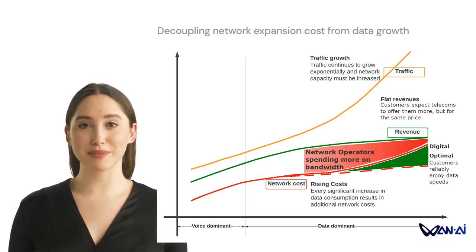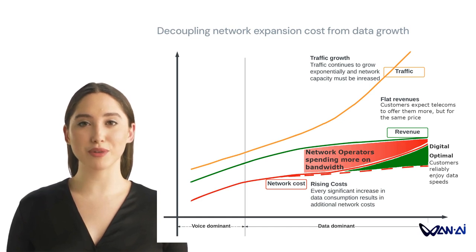WAN AI has been developed to deliver game-changing economics for network operators by moving them from the red zone, where they continue to spend more on bandwidth, to the green zone, where network resources are optimized, allowing customers to reliably enjoy data speeds.